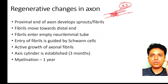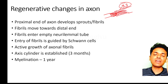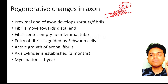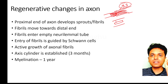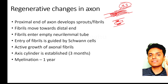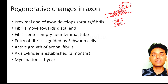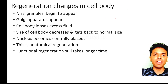There is active growth of these axonal fibrils, and the axis cylinder is established within three months. Once the axis cylinder is formed, myelination of this axis cylinder also occurs, and for myelination to be complete it takes another one year. These are the important regenerative changes in the axon.